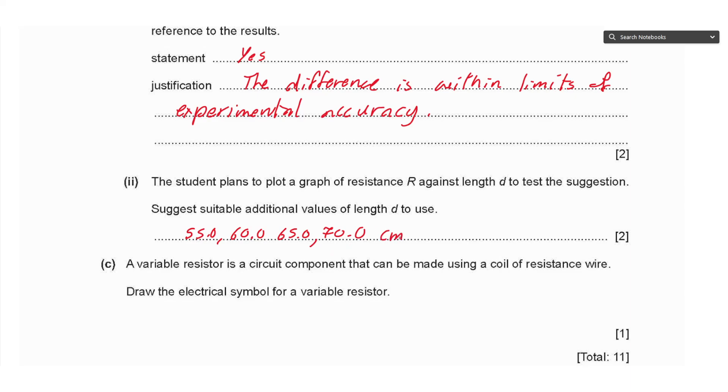Part C says a variable resistor is a circuit component that can be made using a coil of resistance wire. Draw the electrical symbol for a variable resistor. We have a rectangle with an arrow across and two terminals to connect in the circuit.